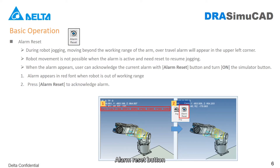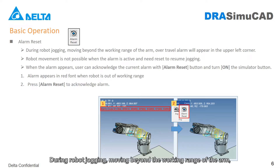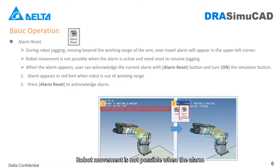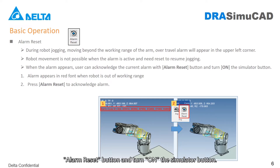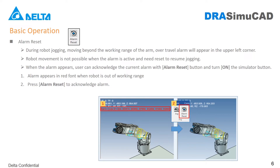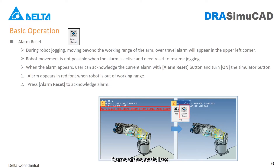Alarm Reset Button: During robot jogging, moving beyond the working range of the arm will cause an over-travel alarm to appear in the upper left corner. Robot movement is not possible when the alarm is active, and it needs to be reset to resume jogging. When the alarm appears, the user can acknowledge it with the Alarm Reset button and turn on the Simulator button. Alarm appears in red font when robot is out of working range. Press Alarm Reset to acknowledge the alarm.